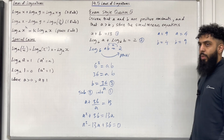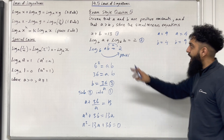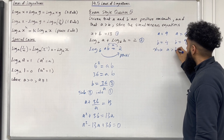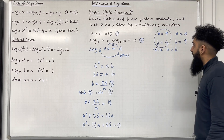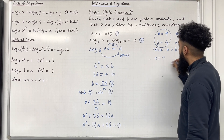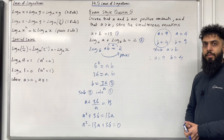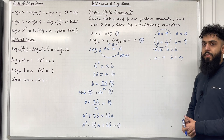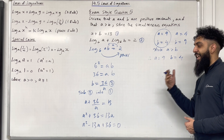Which pair do we take? Going back to the question, A is greater than B. So since A is greater than B, we must take A equal 9 and B equal 4. Therefore A is equal to 9 and B is equal to 4. That completes exam style question 5 and this teaching video on 14.5 Laws of Logarithms. If you found this video useful, please don't forget to subscribe, leave a like, leave a comment, and turn on your notification bell so that you receive notifications every time I post a new teaching video.